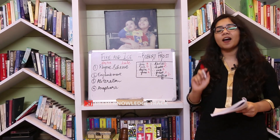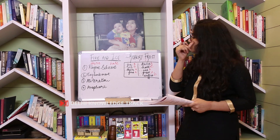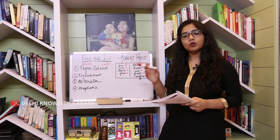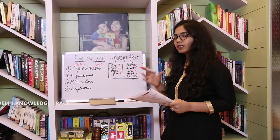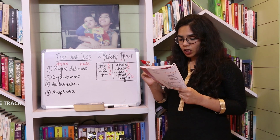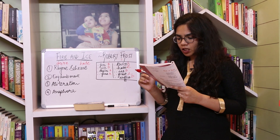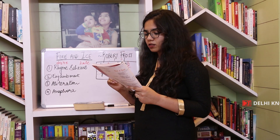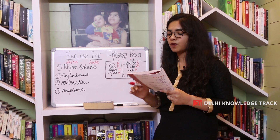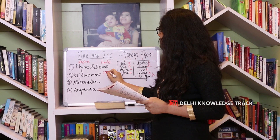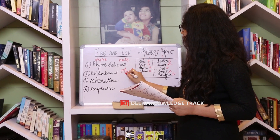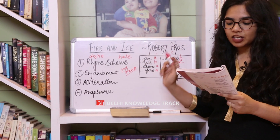The second literary device is enjambment. Enjambment is when one sentence continues across two or more lines — it doesn't end, there's no full stop at the end of the line. For example, in the last part: 'to say that for destruction, ice is also great and would suffice' — that sentence runs across lines in the second stanza. That is an example of enjambment.